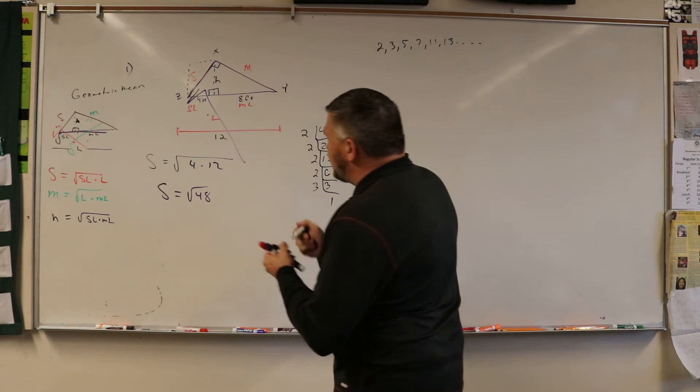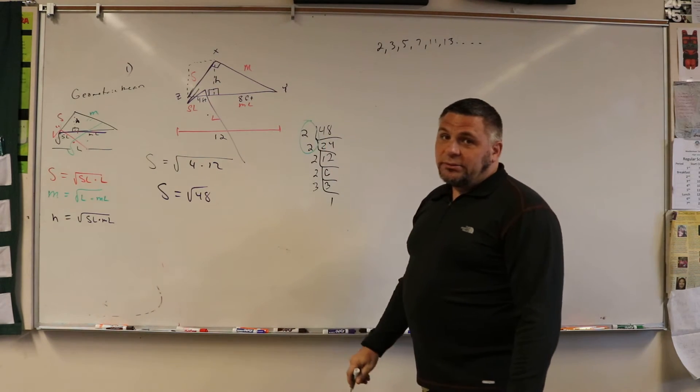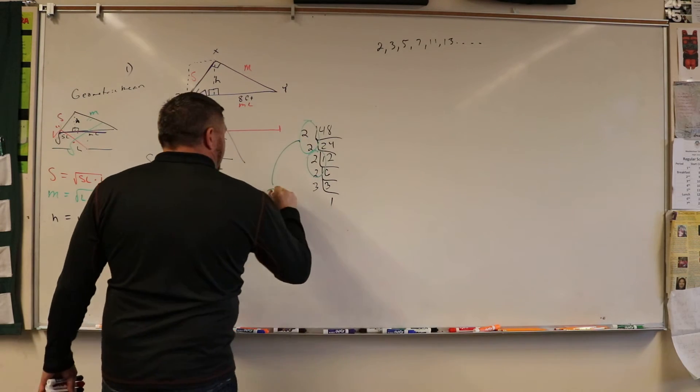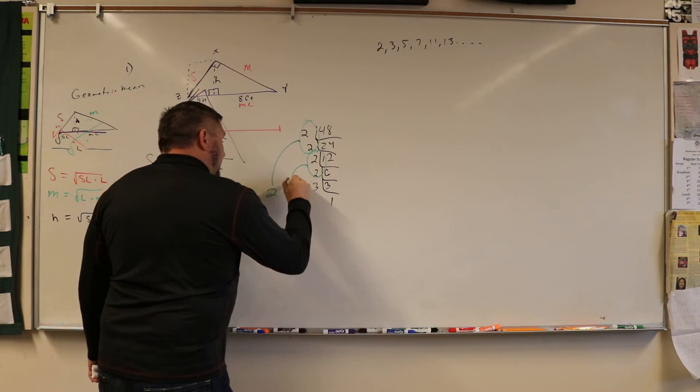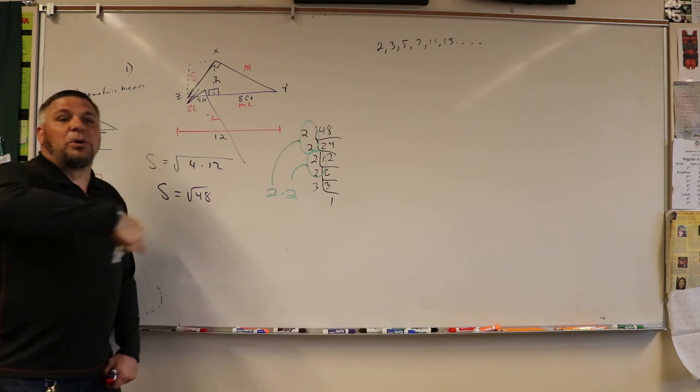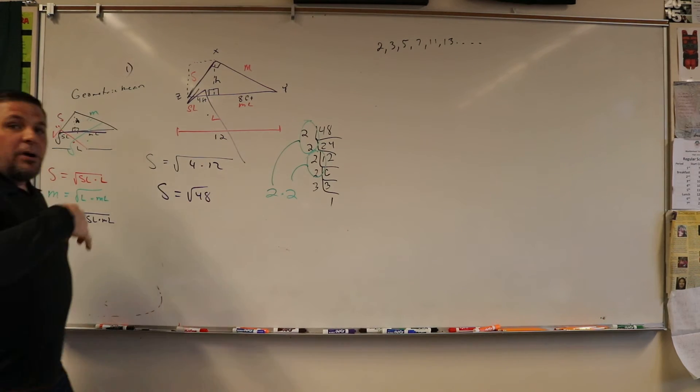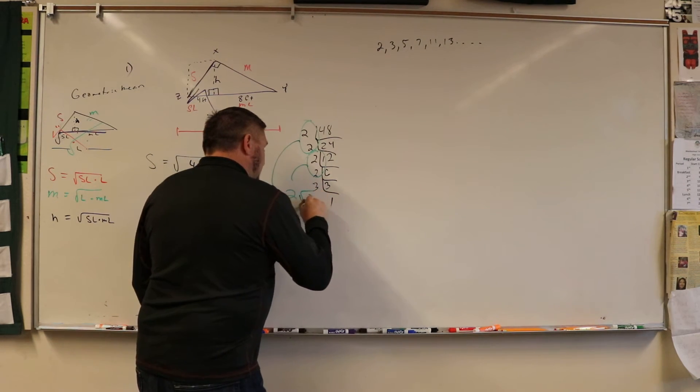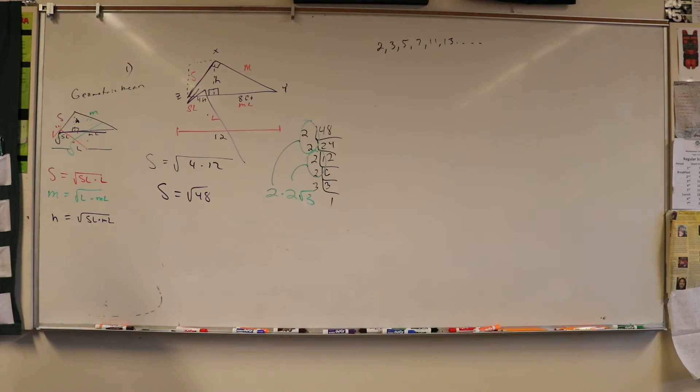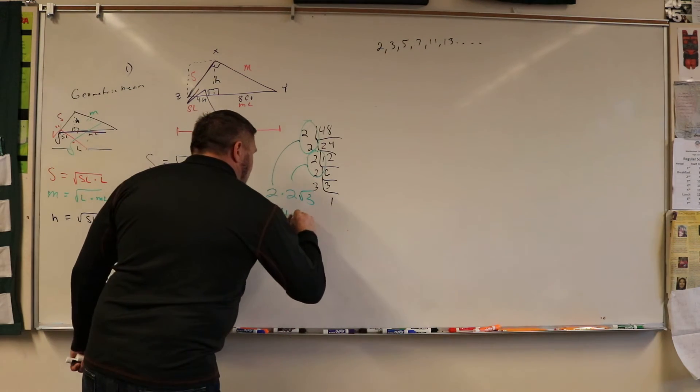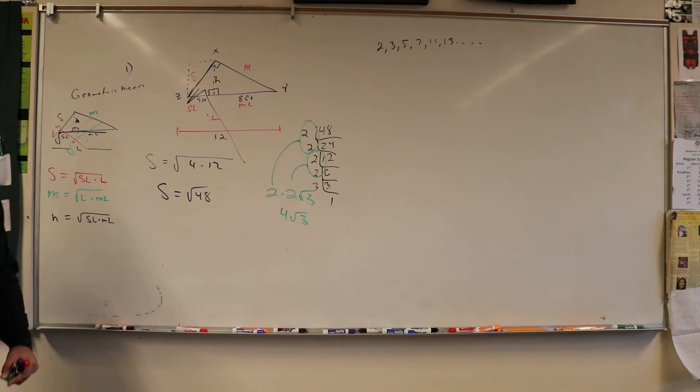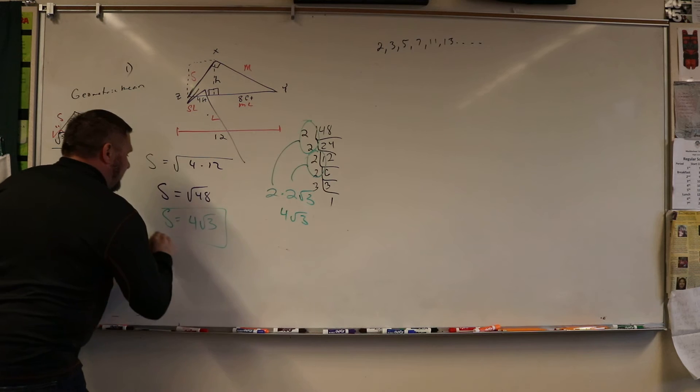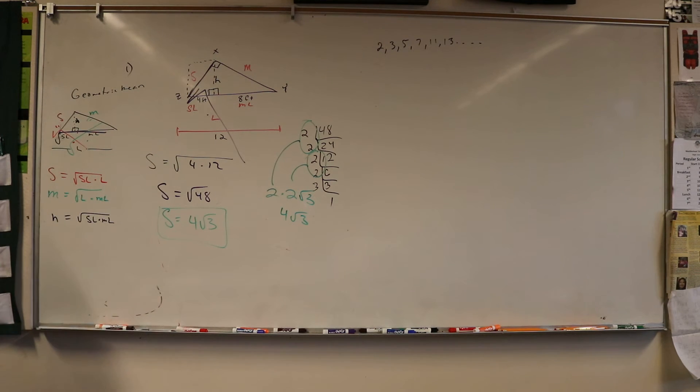This is breaking down radicals. Now we just go through and circle our pairs. We bring out 1, 2, another 2, and these are going to be multiplied. Whatever's left that's not circled, square root of 3. So it's 2 times 2, 4, that would be 4 square root of 3. So S is equal to 4 square root of 3. That is the actual number.